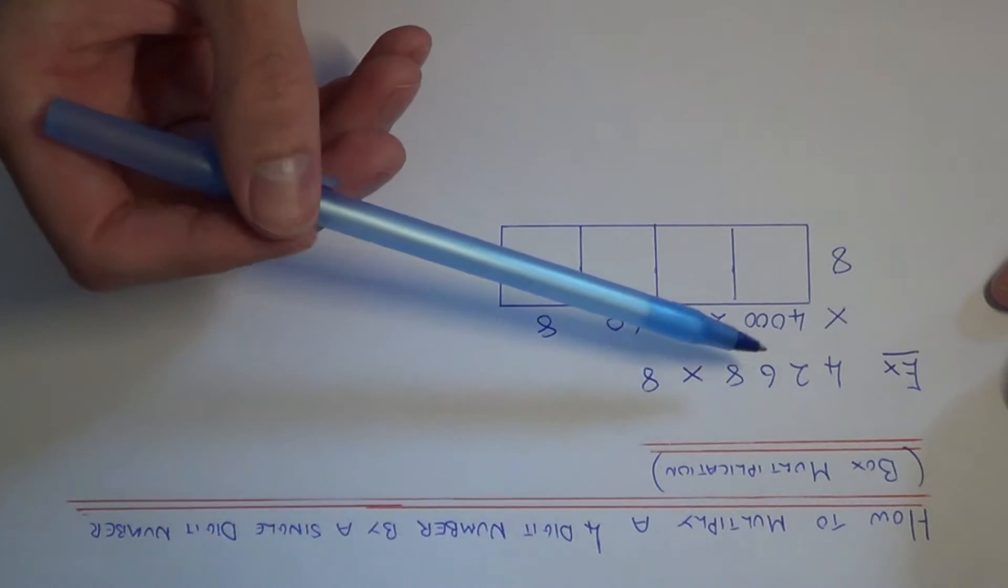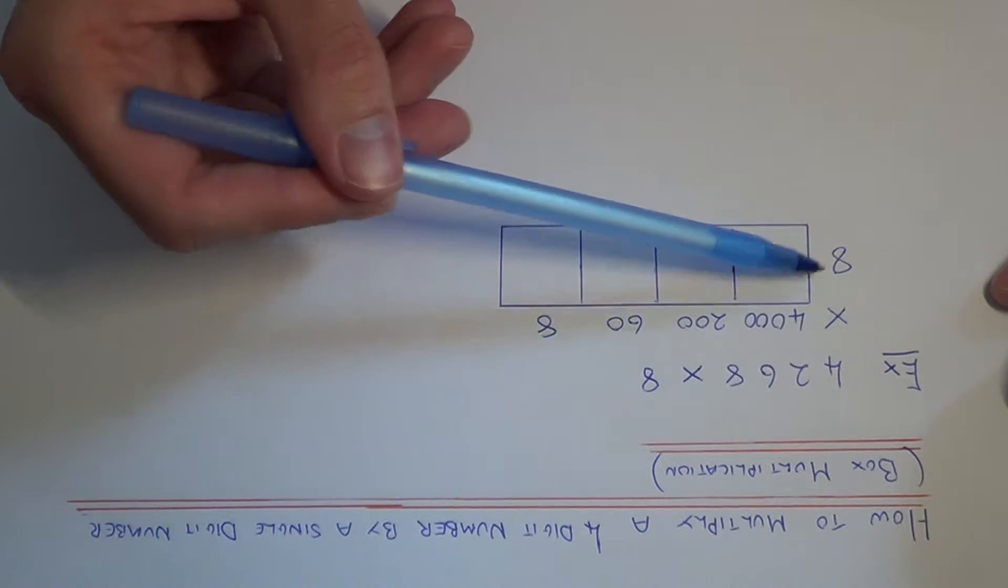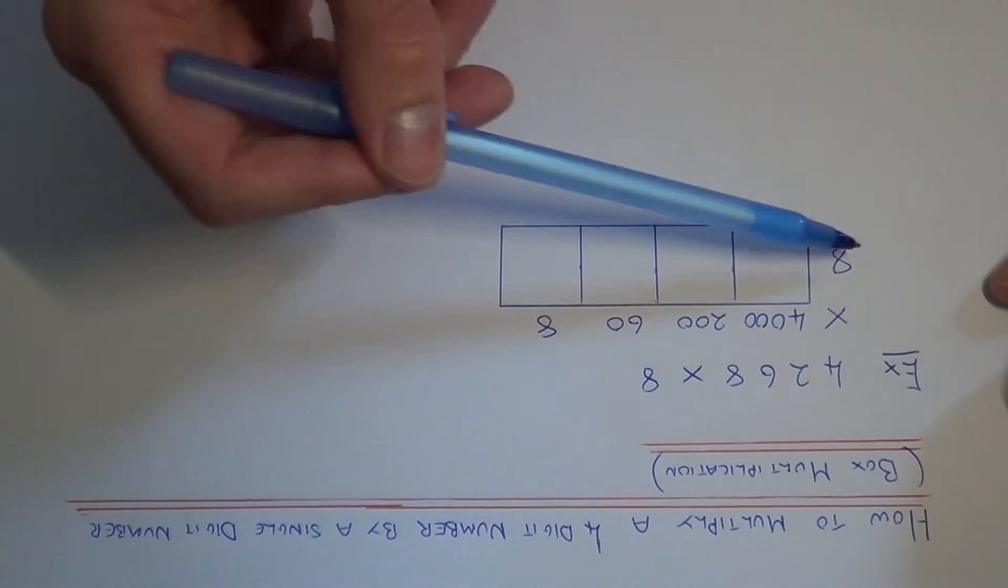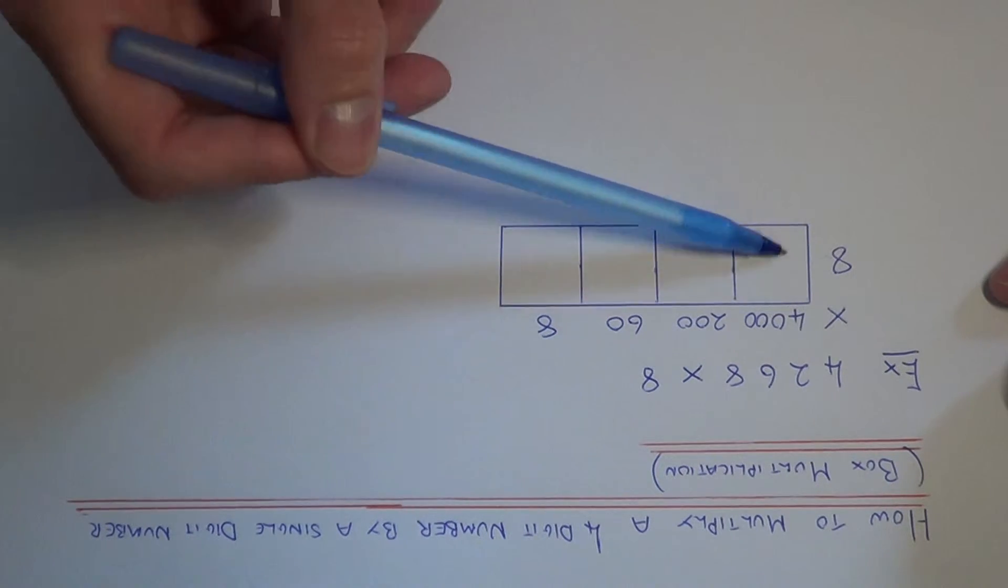So we need to work out next 4,000 times 8, 200 times 8, 60 times 8, and 8 times 8, and fill these answers in the boxes here.